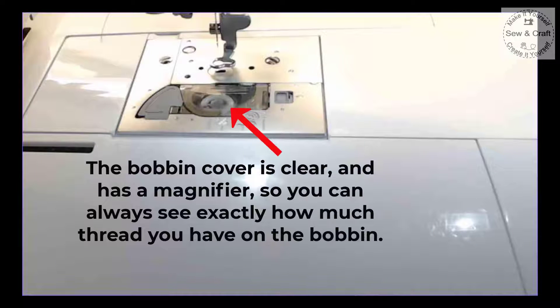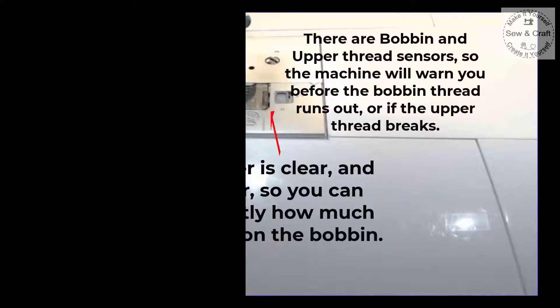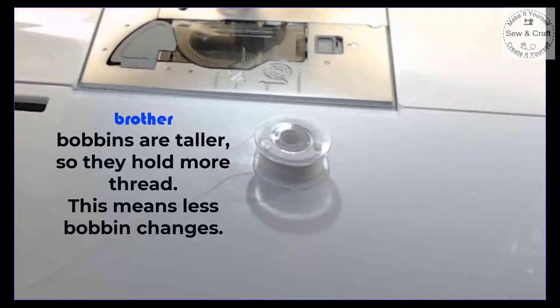The bobbin cover is clear and it has a magnifier so you can always see exactly how much thread you have left on the bobbin. There are also bobbin and upper thread sensors so the machine will warn you before the bobbin thread runs out or if the upper thread breaks. Brother bobbins are taller so they hold more thread, which means less bobbin changes.